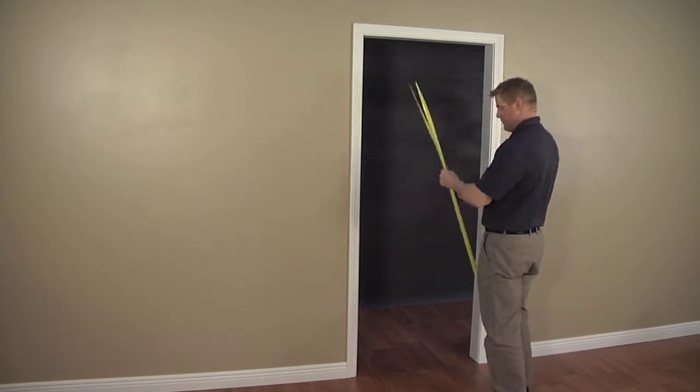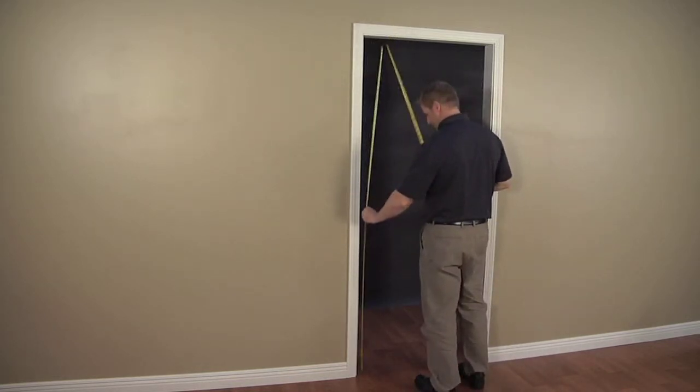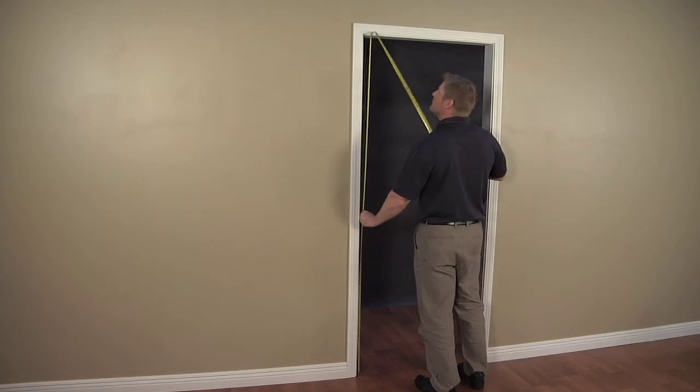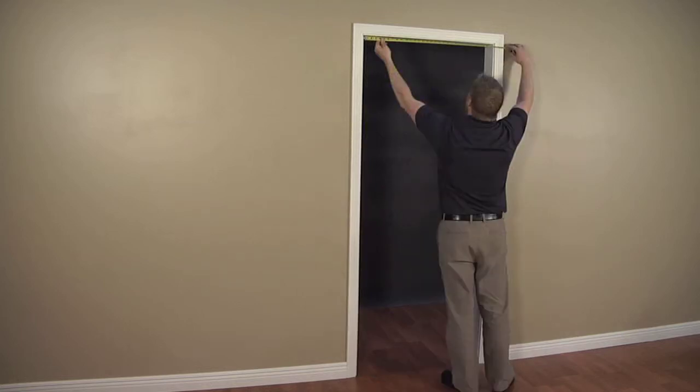To begin, measure your door opening. If your opening height is less than 80 inches, it will be necessary to trim the difference from the bottom of the door. For smaller widths, you can also remove one or two of the 4-inch panels if necessary. Instructions for removing panels are on a separate video.